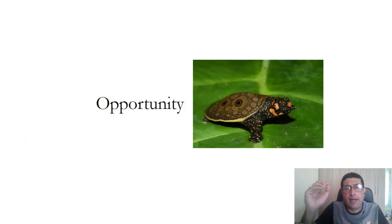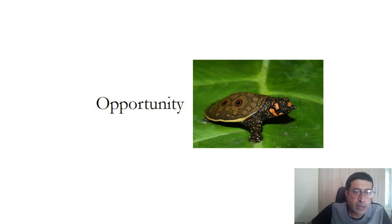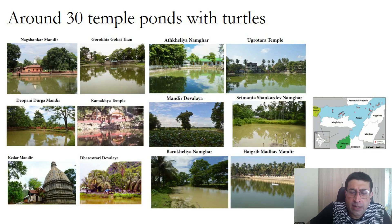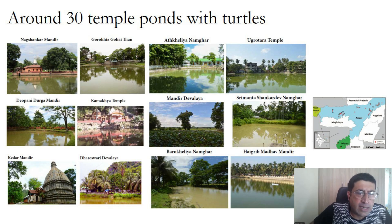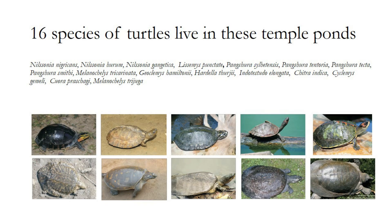These temple ponds do present conservation opportunities. We have listed 30 temple ponds across Assam and adjacent states. Some of the bigger ones include Hoigrib Madhav temple, Nakshankar temple, and Kamakhya temple, which also used to have turtles. Cumulatively across all these temple ponds, we have recorded a total of 16 species of turtle, including most of the critically endangered ones such as the black softshell turtle and the Assam roof turtle.